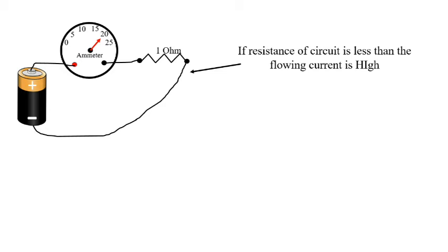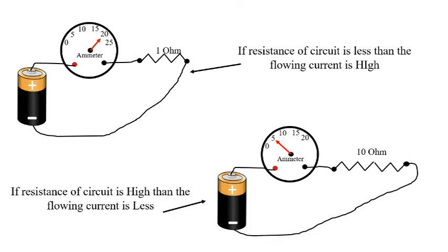And if there is high resistance then the flow of electrons will be low. So there will be low flow of current.